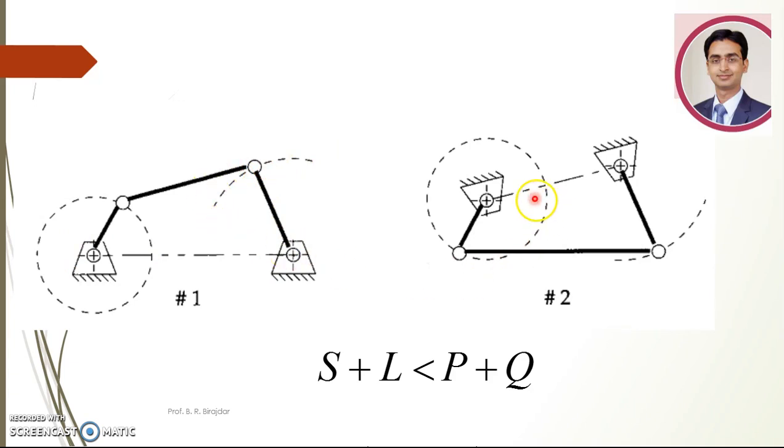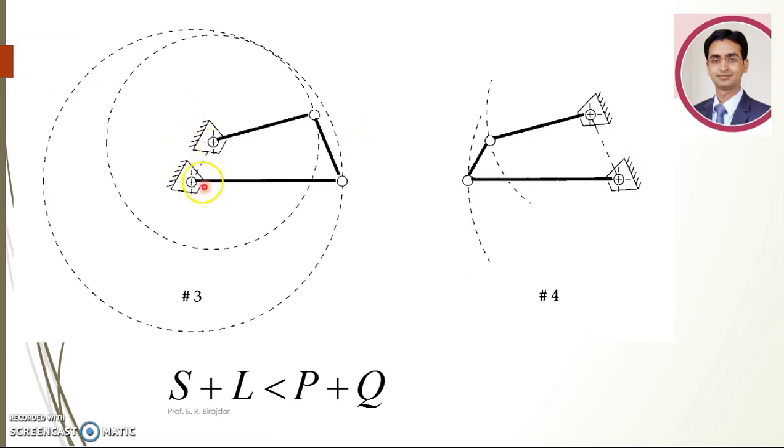Now again see in the second inversion. Here the opposite link, that is the coupler, is fixed in this case. And again the crank is having the rotary motion and the follower is just oscillating up to this center. Now again in the third case, we are fixing the crank. In that case, the coupler and the frame, this coupler is rotating about this center and is having the rotary motion. Here two links are getting rotary motion.